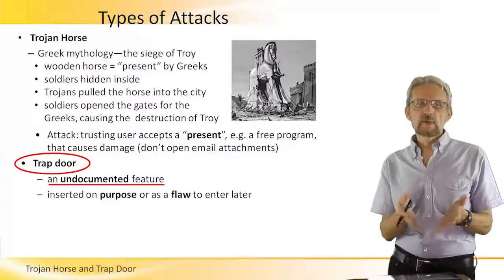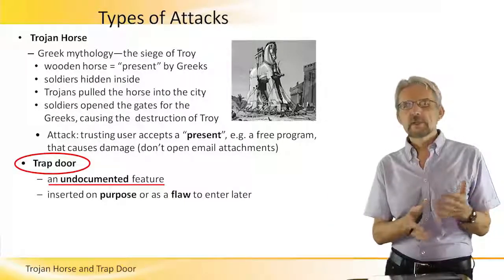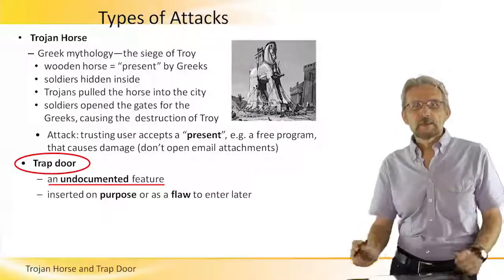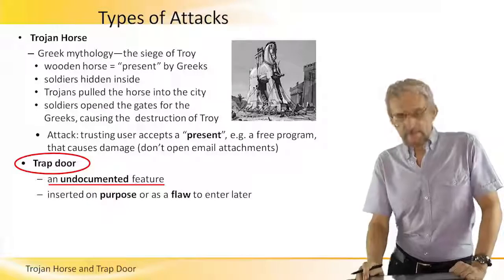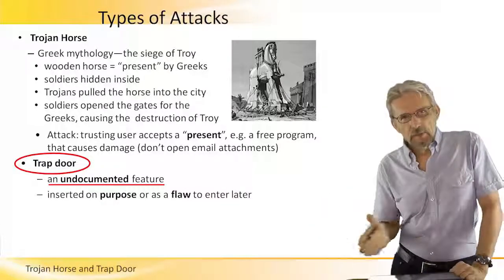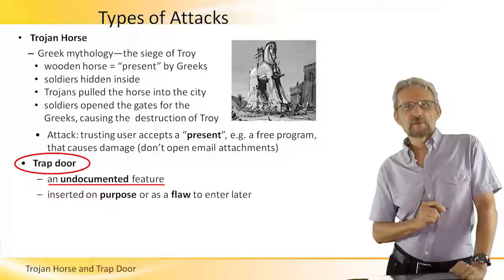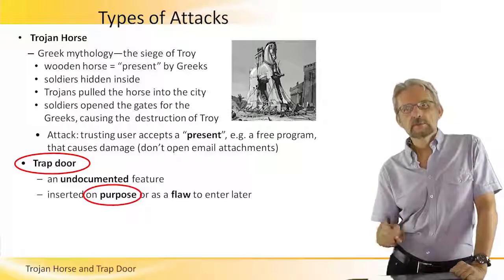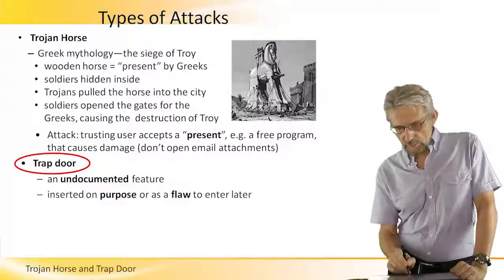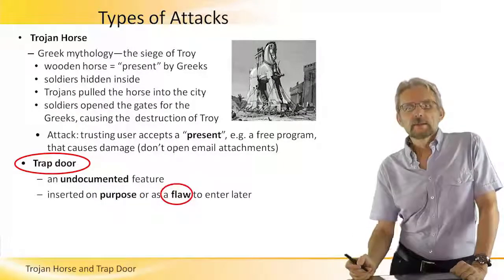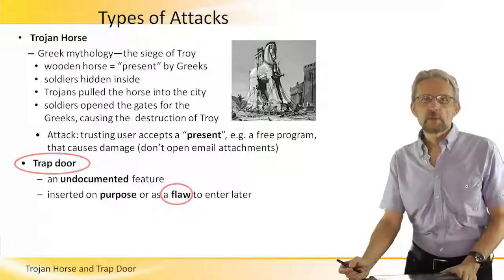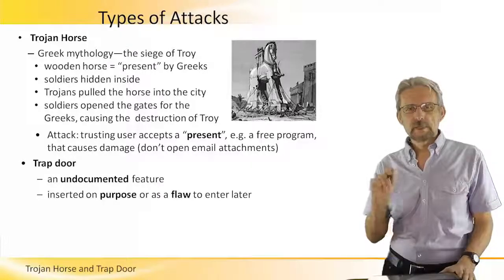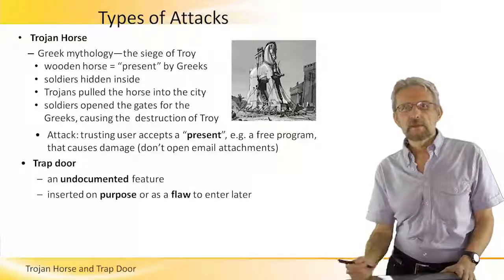For example, you could build a trapdoor which would let you in and bypass all the security later on without checking. If you give it a special password — say, 'abracadabra' — it will let the person in and allow them to do damage after the fact. Now, it could be done on purpose, or it could be some kind of flaw that the programmer knows about and that can be exploited. There will be an example later on when we talk about worms and how that happened in the past.